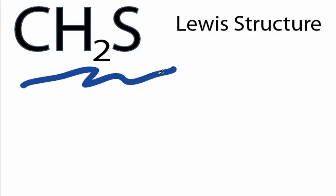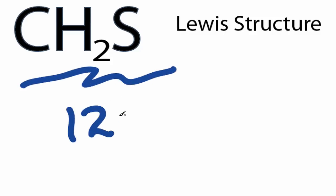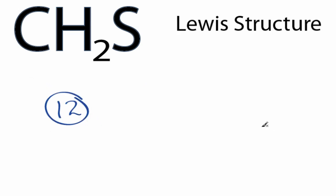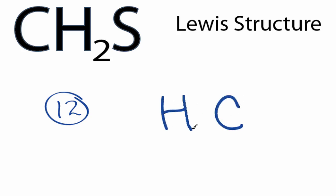For the CH2S Lewis structure, we have a total of 12 valence electrons. Hydrogen atoms always go on the outside of Lewis structures. Carbon is the least electronegative, so we'll put that at the center. We'll put the hydrogens on either side, and we'll put the sulfur right on top.